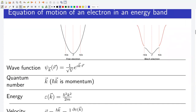Let us derive the equation of motion of an electron in an energy band. The equations look so similar to the free electron equations that I am going to start with the free electron equations and show the minimal changes required to get the equation of motion of Bloch electrons. This is the E versus k parabola for free electrons, and this is the energy dispersion relation for Bloch electrons plotted using the extended zone scheme. I have shown just two bands: band one and band two.